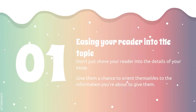So, easing your reader into the topic — as you get started, a lot of people want to just jump right into the paper, so their first sentence is going to be like 'Catcher in the Rye, Holden Caulfield definitely is grieving.' That's too much, that's too soon. Your reader needs a general understanding of what you're talking about before you actually reference all of that.